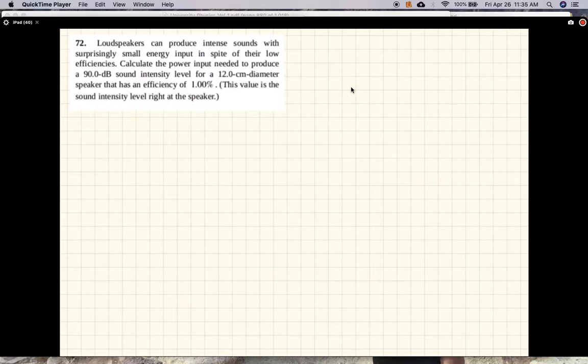So let's actually calculate the intensity that the speaker needs to produce. Beta, the decibel level, is 10 times log I over I₀. Beta is 90 dB.